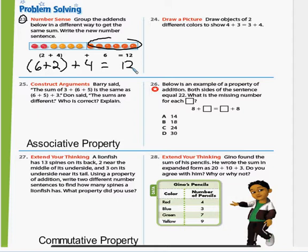25. Barry says the sum of three plus six plus five is the same as six plus five plus three. Don says the sums are different. Who is correct? The sums are going to be the same. And that's because of the associative property of addition. All they did is regrouped it in a different way and you'd get the same answer because you're using the same numbers.